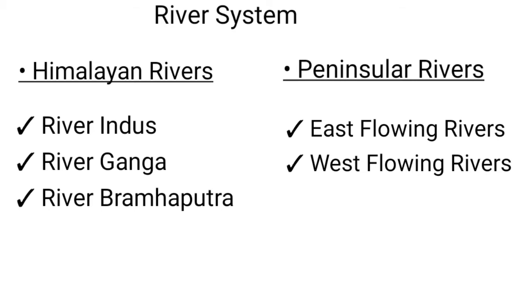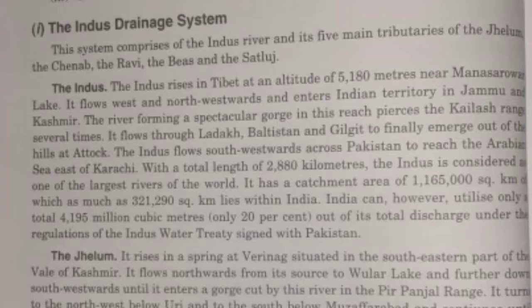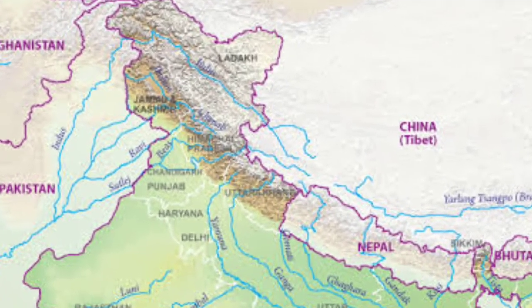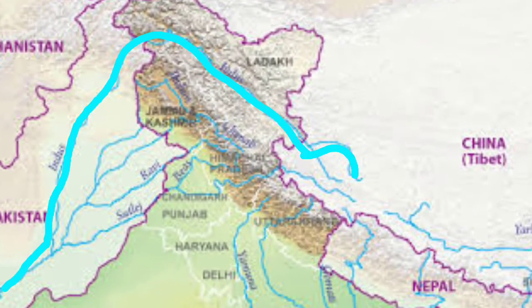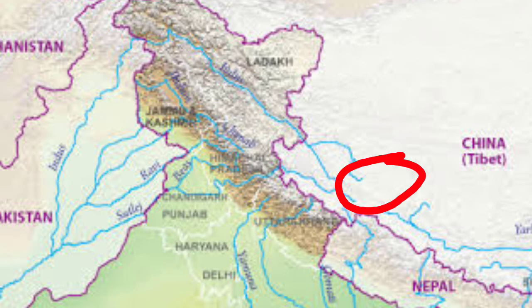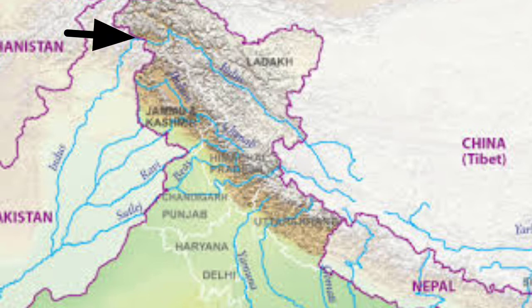River Indus comprises the Indus and its five main tributaries. As you can see in the diagram, River Indus originates in Lake Mansarovar in Tibet and flows towards the northwest direction. It enters India at the Kailash range creating a deep gorge, comes out from the Attock hills in Pakistan, and flows towards the south, finally draining into the Arabian Sea.